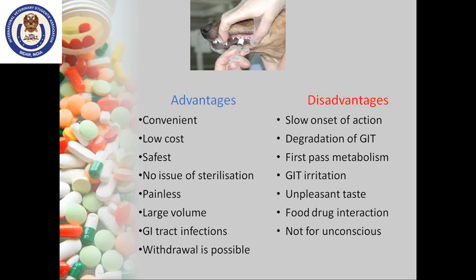Third disadvantage is first-pass metabolism. The drug reaches circulation via the liver, and this metabolism decreases the efficacy and concentration of the drug before it reaches systemic circulation. Fourth is GIT irritation — during disintegration, the drug evolves gases and causes pain and irritation, leading to discomfort and acidity. Fifth is unpleasant taste — most drugs taste bitter, so they are given by mixing with feed or water. Sixth is food-drug interaction, which reduces efficacy. And oral route is not suitable for unconscious patients.